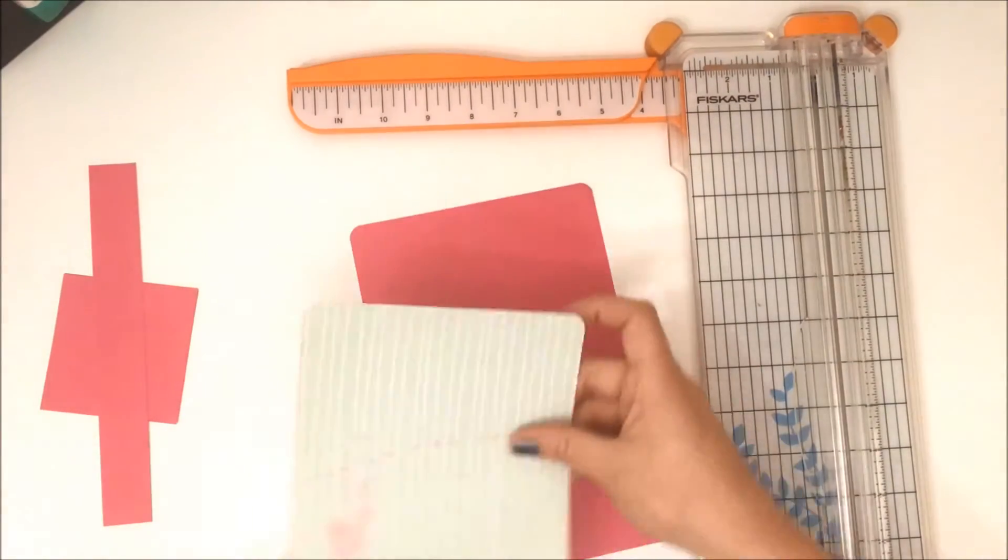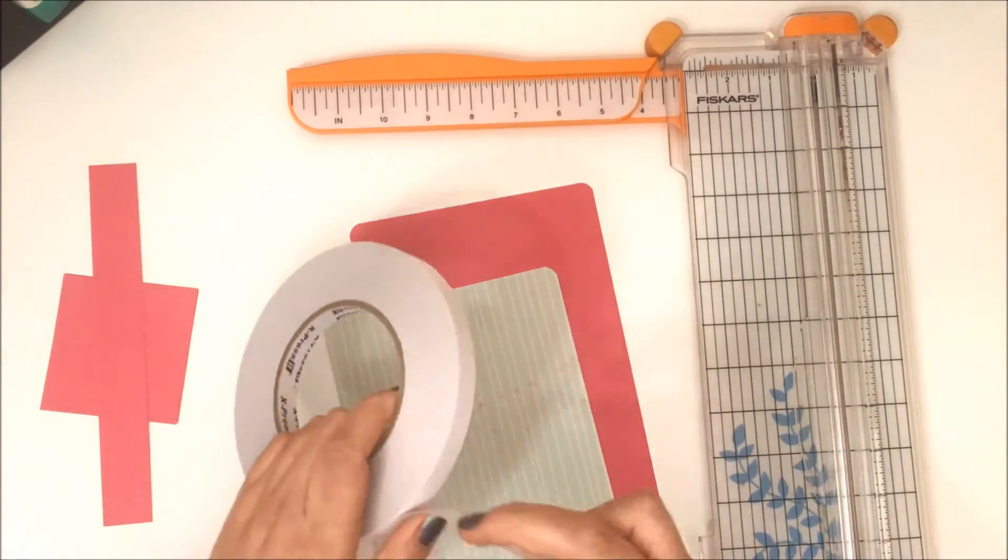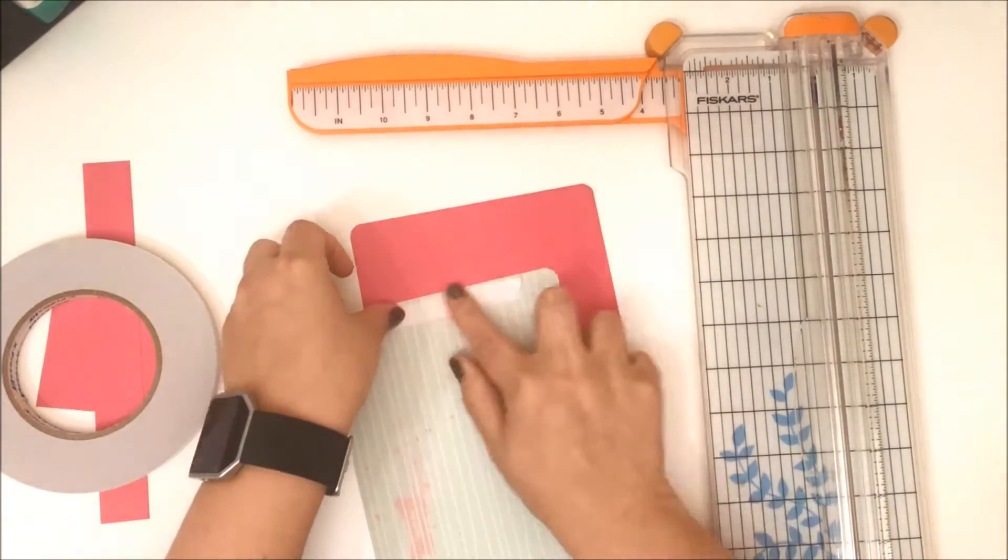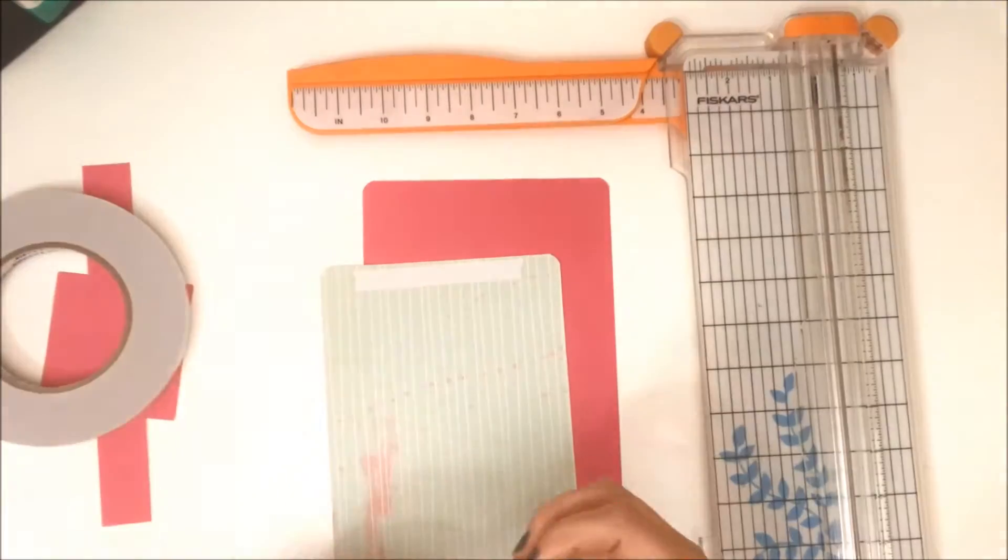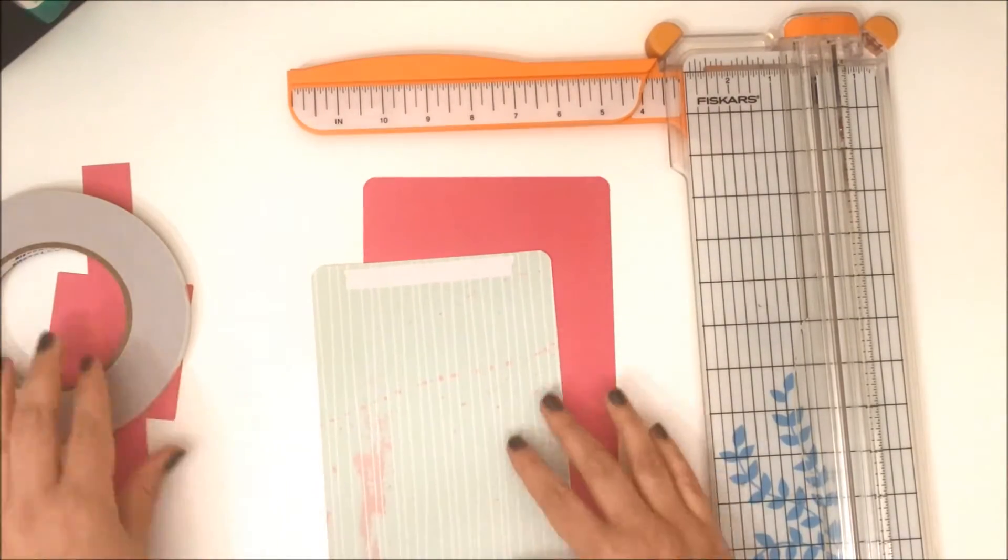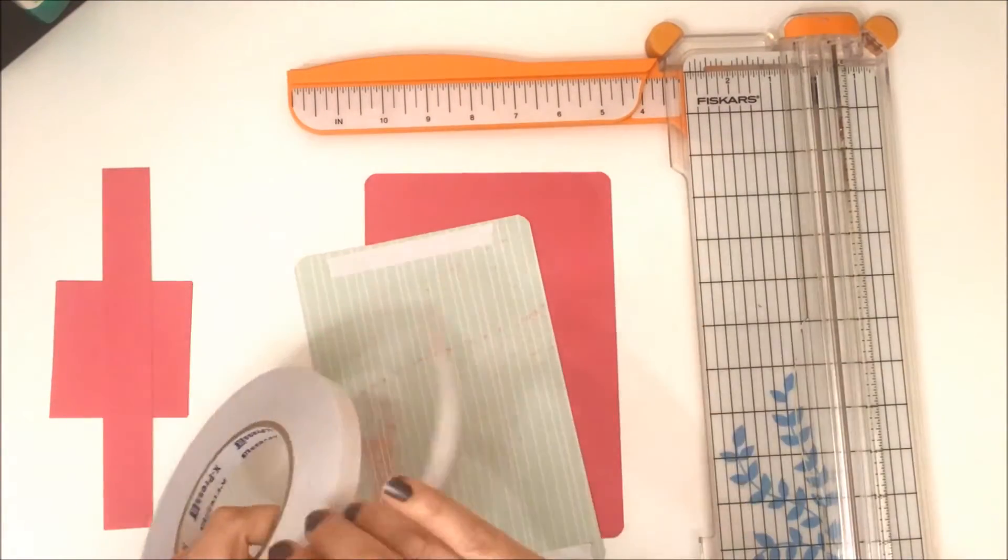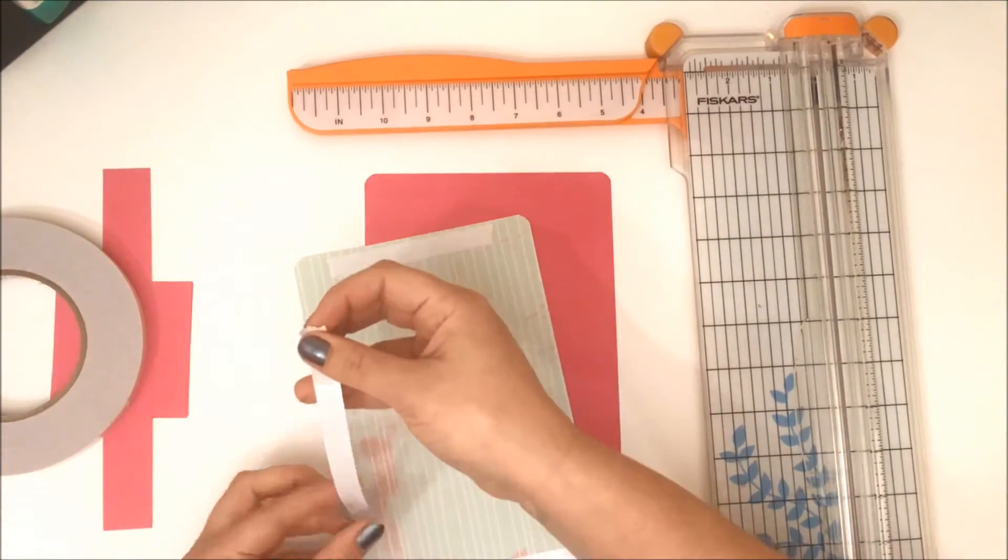You just need some cardstock or patterned paper. I used pink cardstock that measured eight and a half inches by five and three-quarter inches. I personally rounded the corners, but that's optional.